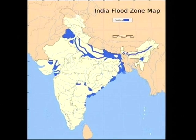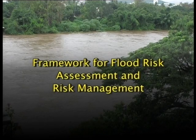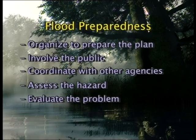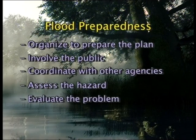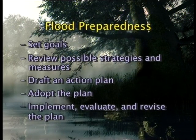A very basic step in vulnerability reduction is to identify high risk areas, prepare risk maps showing the likely risk at different probability levels of flooding, and make this knowledge widely available. The framework of flood risk assessment and management included in disaster preparedness plans includes: organize to prepare the plan, involve the public, coordinate with other agencies, assess the hazard, evaluate the problem, set goals, review possible strategies and measures, draft an action plan, adopt the plan, implement, evaluate, and revise the plan.